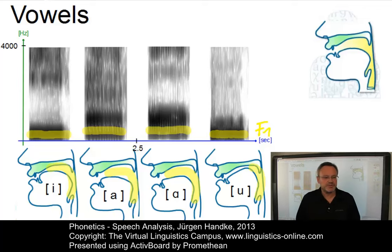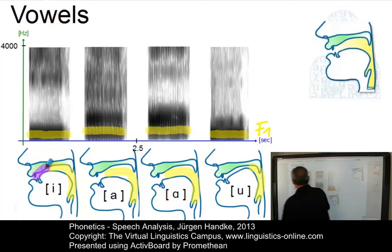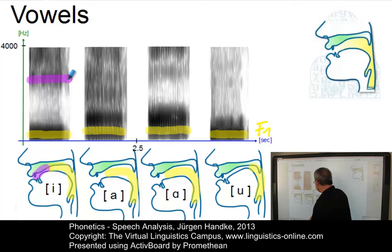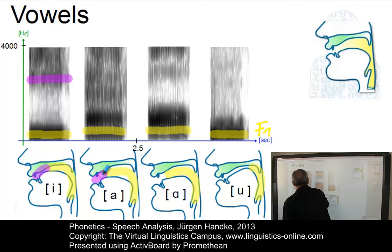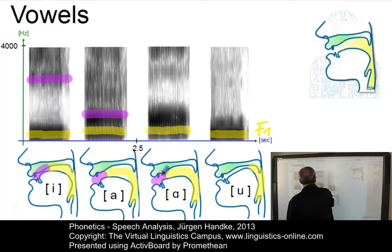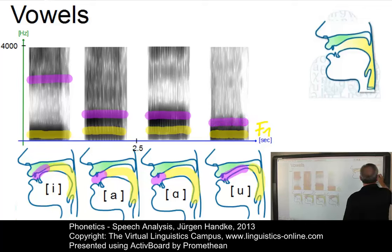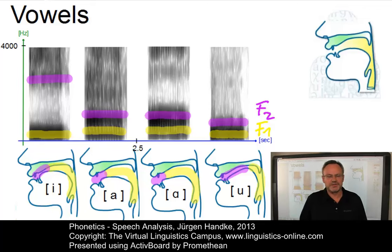Let's now look at the second formant, F2, which is normally associated with the oral cavity. For E, we have a very small front cavity leading to a very high frequency of F2. For A, we have a relatively large front cavity leading to a mediocre value. For R, the cavity is quite similar, perhaps a little bit lower than for A. And for U, there is only a very narrow cavity leading to a low frequency value for F2. So these are the formant characteristics for the four cardinal vowels.